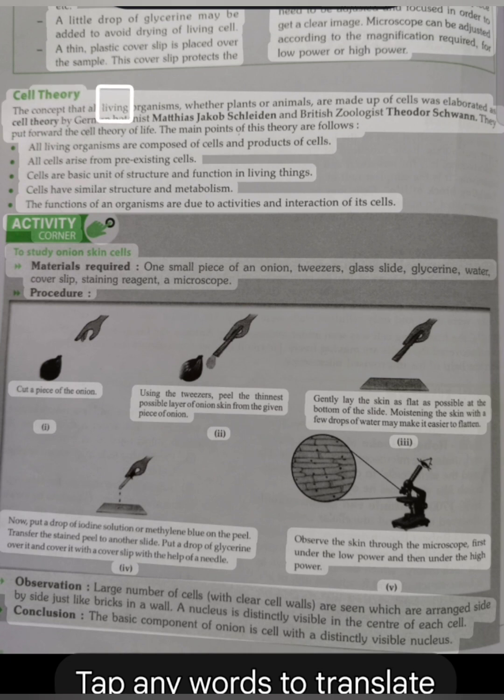Cell Theory. The concept that all living organisms, whether plants or animals, are made up of cells was elaborated by botanist Matthias Jakob Schleiden and British zoologist Theodor Schwann. They put forward the cell theory of life. The main points of this theory are follows: All living organisms are composed of cells and products of cells. All cells arise from pre-existing cells. Cells are basic unit of structure and function in living things. Cells have similar structure and metabolism. The functions of an organism are due to activities and interactions of its cells.